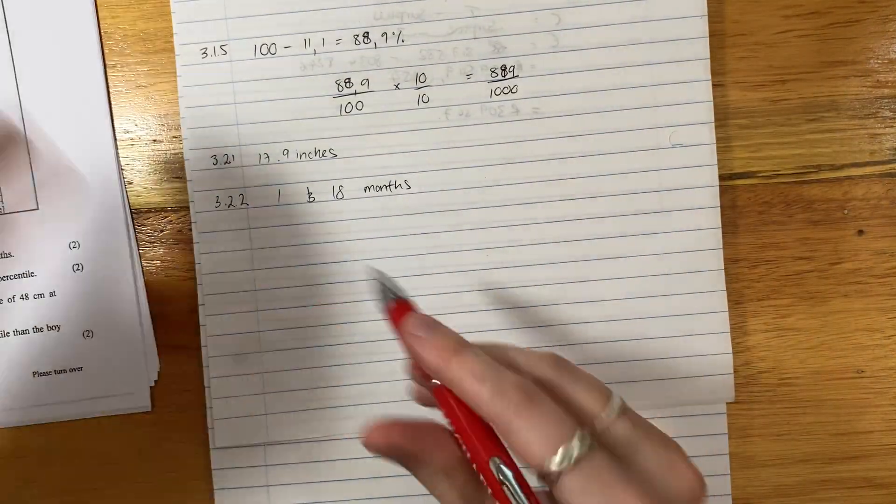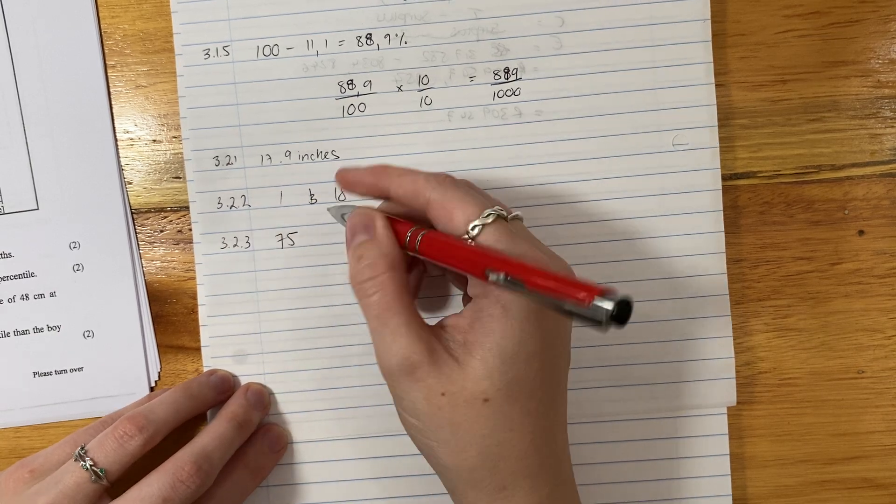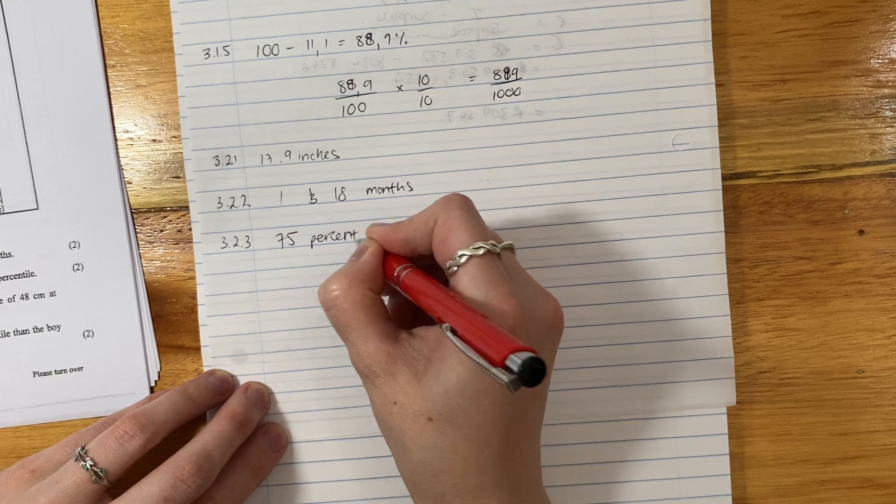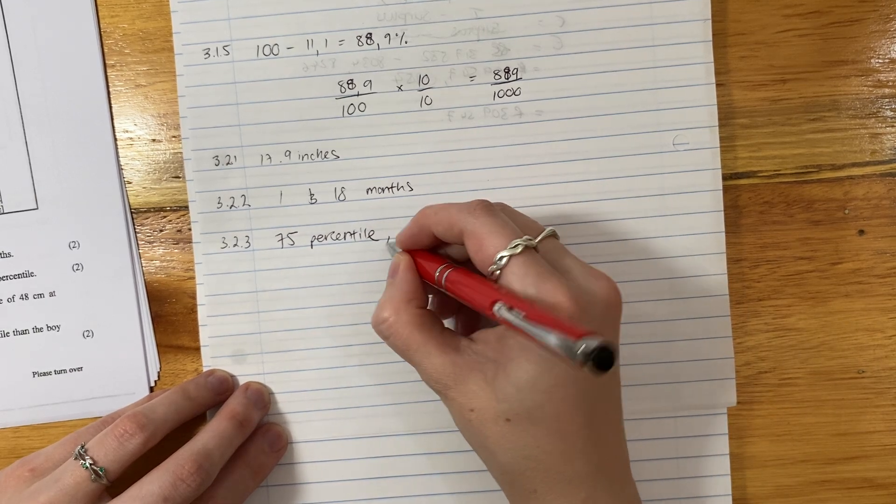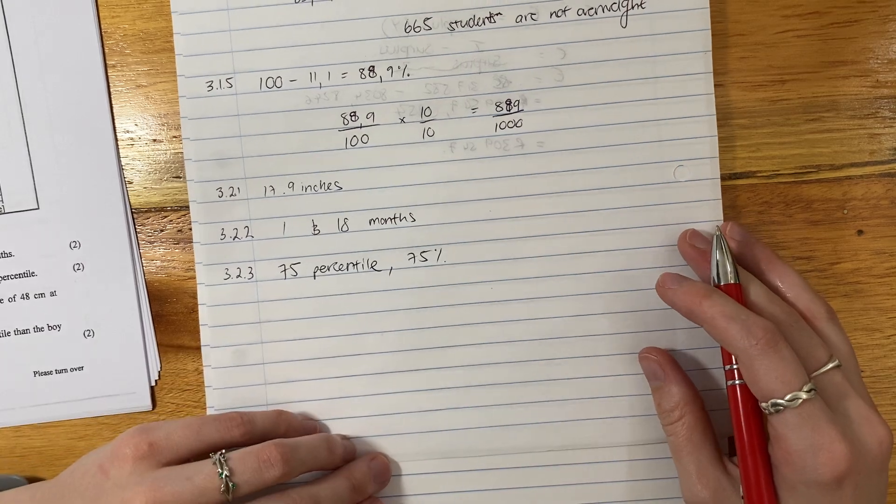So our answer there, 3.2.3, is the 75th percentile, right? Or you can just write the 75%. Either way, it's fine.